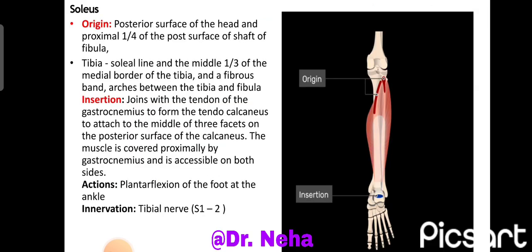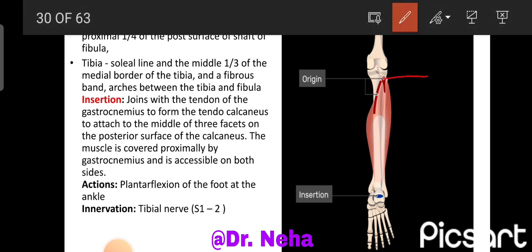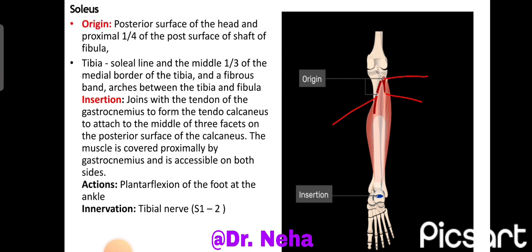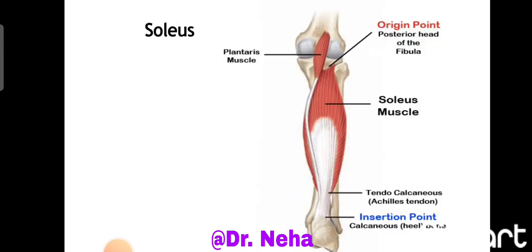Then we have the soleus muscle. It arises from the posterior surface of the head and posterior surface of the upper one-fourth of the shaft of the fibula, the soleal line, the middle one-third of the medial border of the tibia, and a fibrous band arching between the tibia and the fibula. It is inserted on the calcaneum via the tendo Achilles — that is the calcanean tendon — along with the gastrocnemius and plantaris, on the middle facet of the posterior surface of the calcaneum. The action is plantar flexion of the ankle and it is supplied by the tibial nerve. The soleus muscle is so named because of its shape.